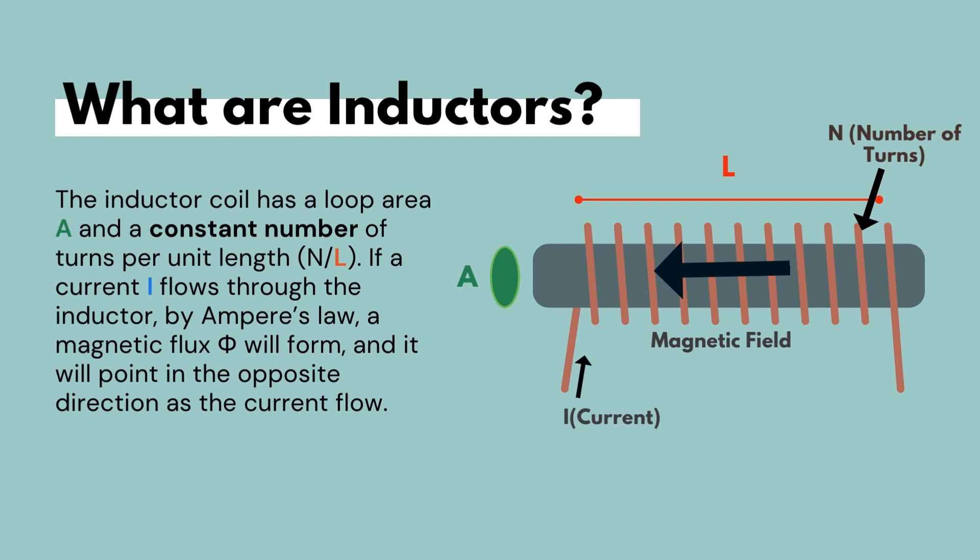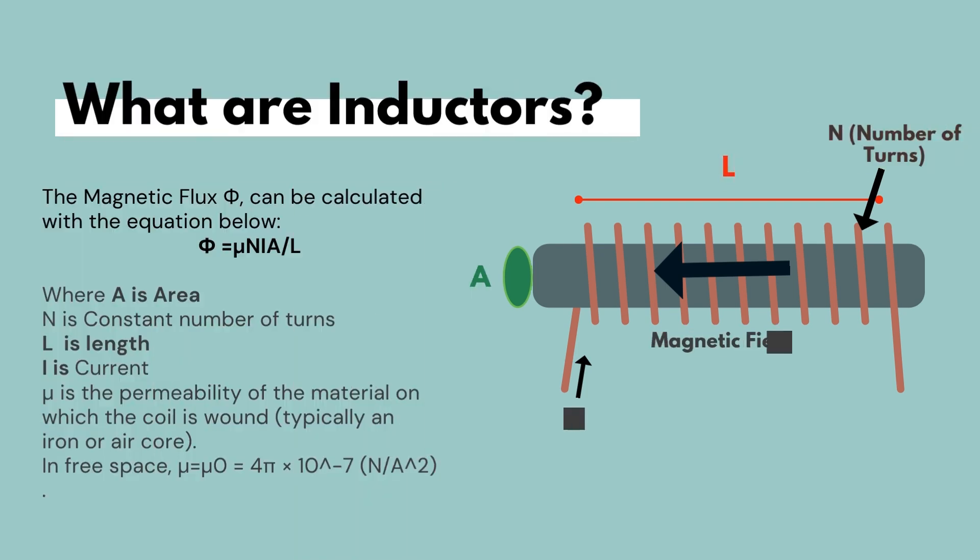So we can calculate the magnetic flux generated by the current flowing through this wound coil by taking into consideration the cross-sectional area, the number of turns, the current flowing through, and the permeability of the material on which the coil is wound — typically either air or iron — and dividing that quantity by the length of the inductor.